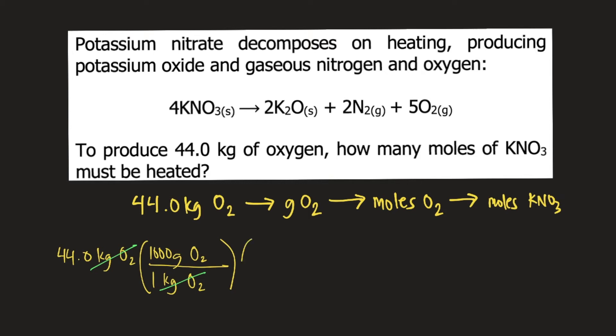Next is to convert grams of O2 to moles of O2. We need the molar mass of O2, which is 32 grams per mole. We put 32 grams at the bottom and 1 mole on top so that grams of O2 will cancel. Now we have moles of O2.